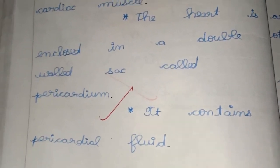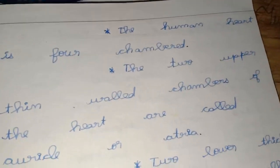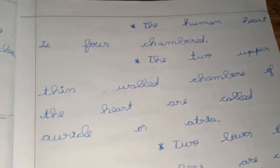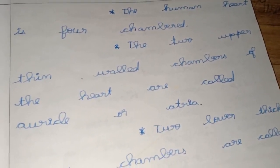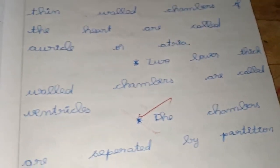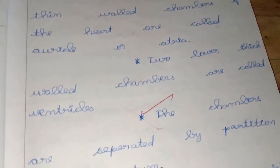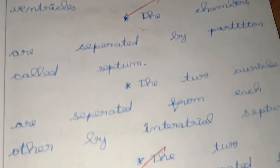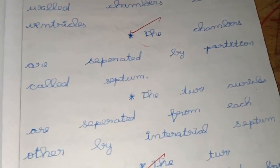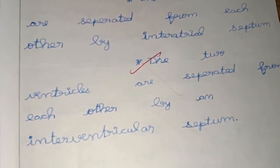The pericardium contains pericardial fluid between its walls. The heart has 4 chambers. The 2 upper thin-walled chambers are called auricles or atria. The 2 lower thick-walled chambers are called ventricles. The chambers are separated by partitions called the septa. The 2 atria are separated by the inter-atrial septum, and the 2 ventricles are separated by the intra-ventricular septum.